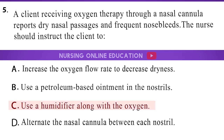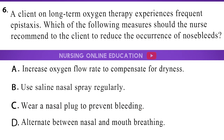The answer is option C: Use a humidifier along with the oxygen. A client on long-term oxygen therapy experiences frequent epistaxis. Which of the following measures should the nurse recommend to reduce the occurrence of nosebleeds? A. Increase oxygen flow rate to compensate for dryness. B. Use saline nasal spray regularly. C. Wear a nasal plug to prevent bleeding. D. Alternate between nasal and mouth breathing.